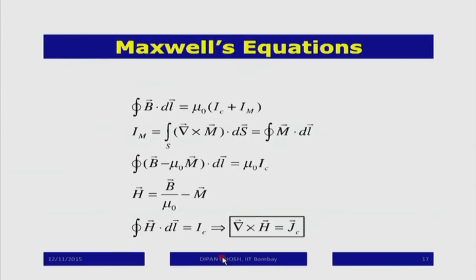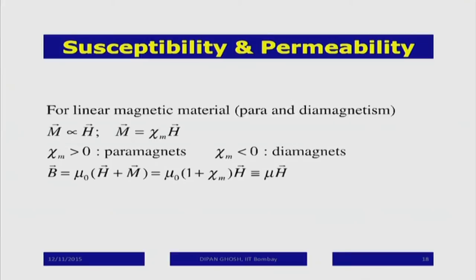Closing the discussion of magnetostatics: for linear magnetic materials, the magnetization is proportional to H, with proportionality constant called the susceptibility chi. Then B = mu_0 (1 + chi) H, and (1 + chi) defines the relative permeability. Just as mu_0 is the permeability of vacuum, mu_0(1 + chi) is the permeability of the linear magnetic medium. This completes electrostatics and magnetostatics — covering all time-independent components of Maxwell's equations.